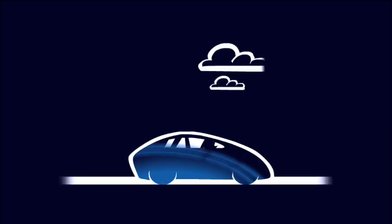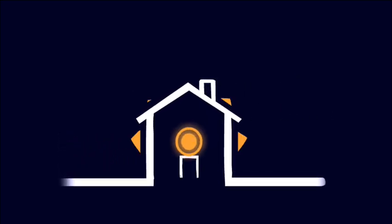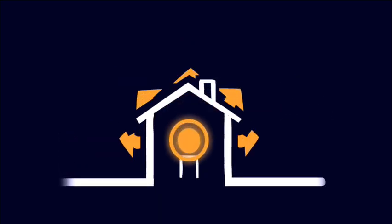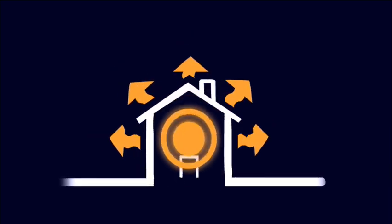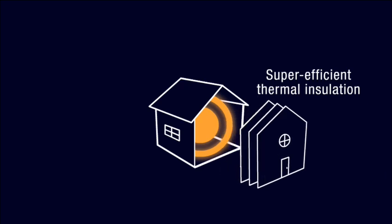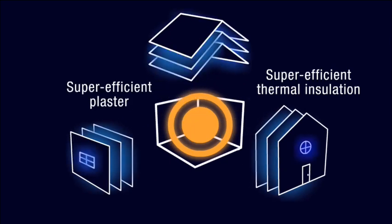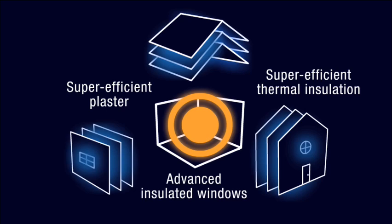We can become more energy efficient by optimizing the insulation of our homes. The energy we pour into our homes by heating them and cooling them often quickly seeps out. By installing super-efficient thermal insulation and special plaster in the walls and ceilings, by insulating the windows, we can decrease the amount of energy needed to heat and cool homes.